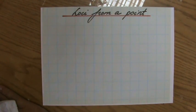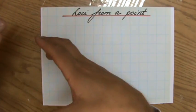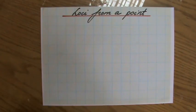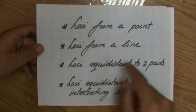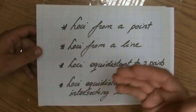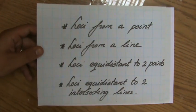Welcome to this video from explainingmaths.com about loci from a point. In the previous video I said we have four types of loci: from a point, from a line, equidistant to two points, and equidistant to two intersecting lines.